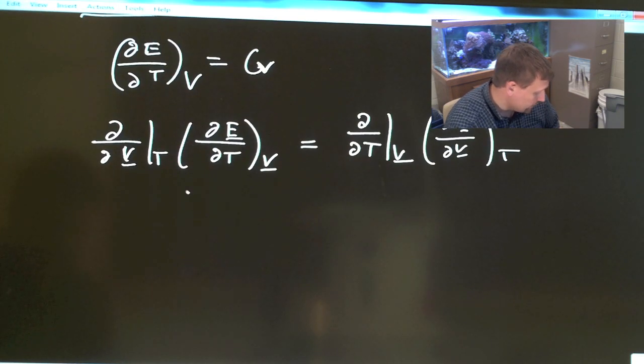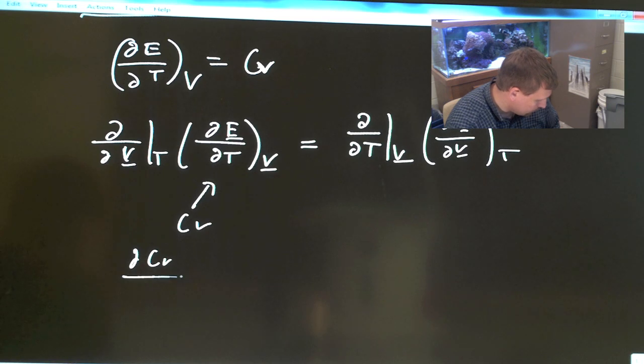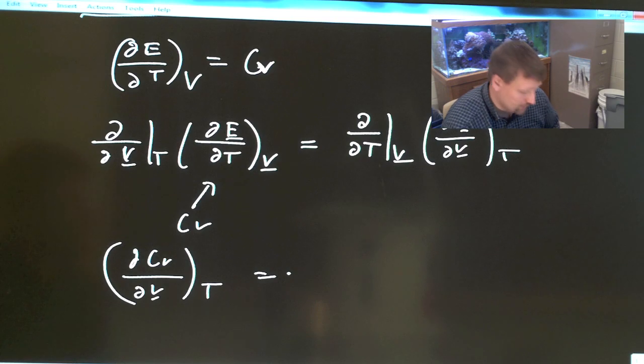Well, right away, we see we can substitute in CV here and we already have half of our equation that we're looking for. Partial CV partial V underbar constant T equals all this on the other side.